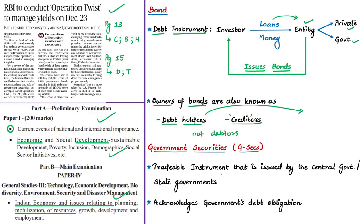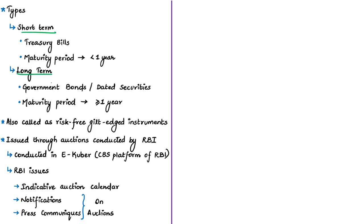A government security is a tradable instrument issued by the Reserve Bank of India on behalf of the central government or state governments. It acknowledges the government's debt obligation. If a person purchases a government security, the government has the obligation to pay the face value or interest, and the holder can trade it on a stock exchange — hence it is called a tradable instrument. Government securities can be short-term, called treasury bills with original maturity less than one year, or long-term, called government bonds or dated securities with maturity of one year or more.